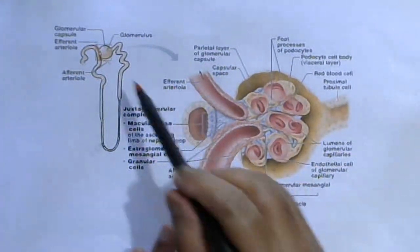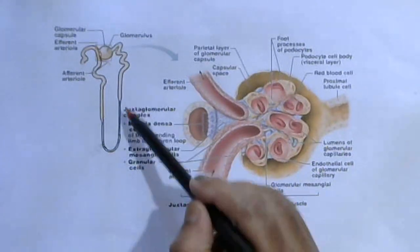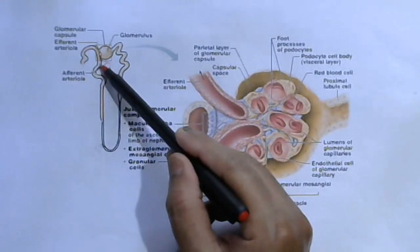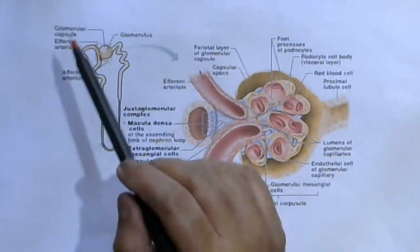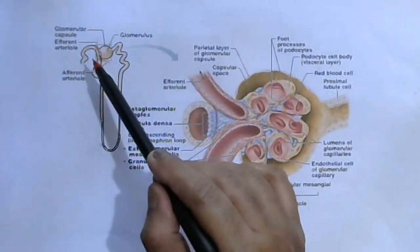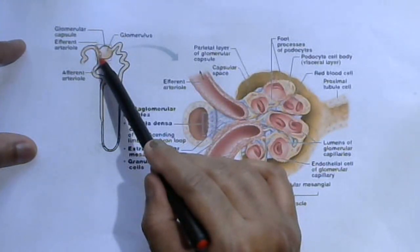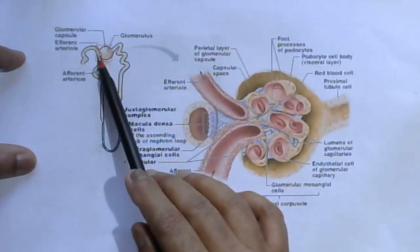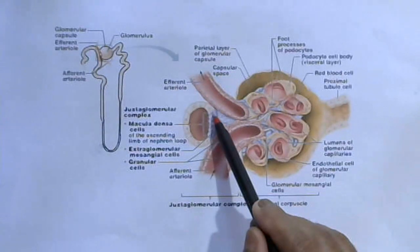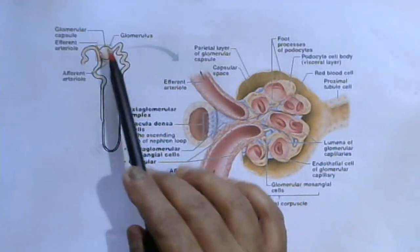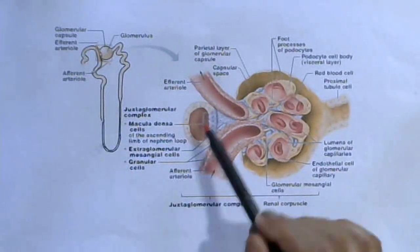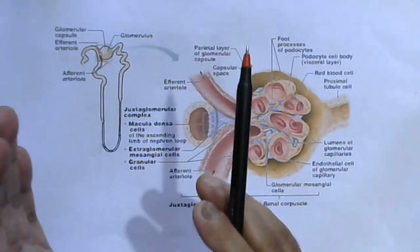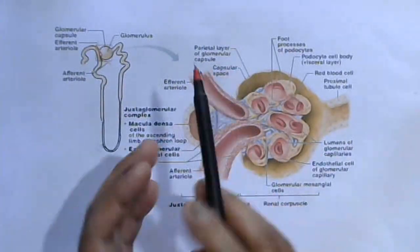Looking at the nephron anatomy: after the proximal convoluted tubule comes the Loop of Henle, and after the ascending limb of the Loop of Henle comes the distal convoluted tubule. The very first portion of the distal convoluted tubule is actually straight. This segment of the distal convoluted tubule is called the macula densa segment, because the wall of this segment contains special cells called macula densa cells. This macula densa segment makes contact with the vascular pole of the renal capsule and forms the juxtaglomerular apparatus.